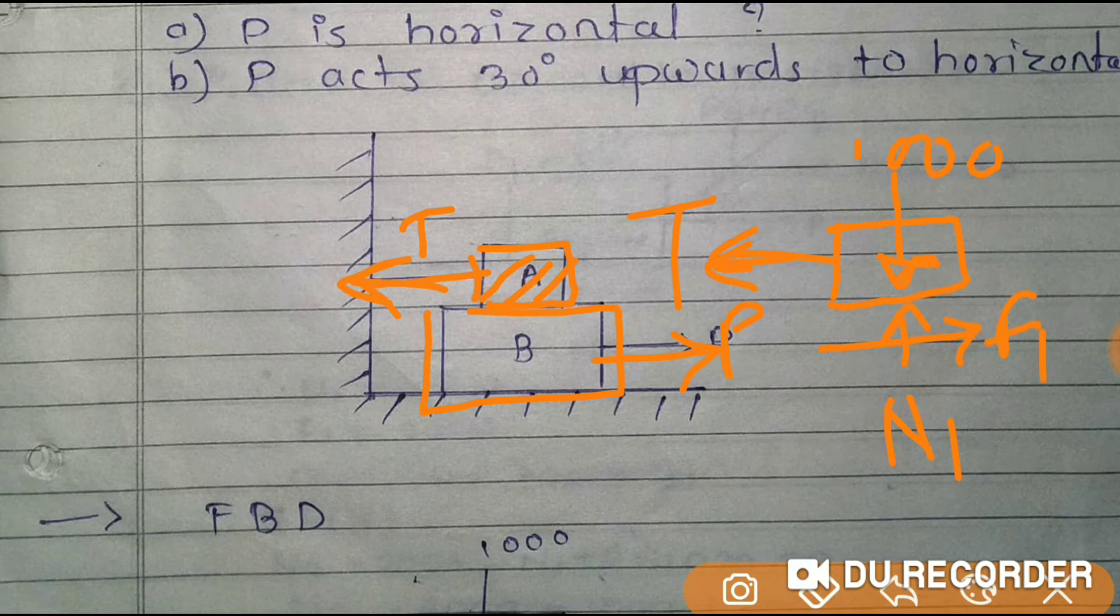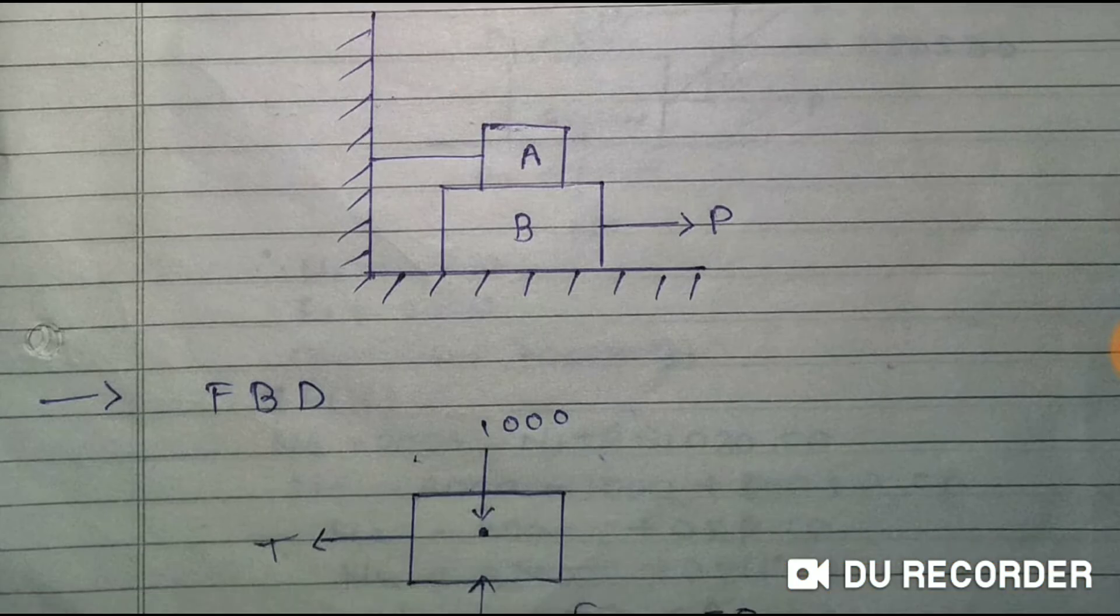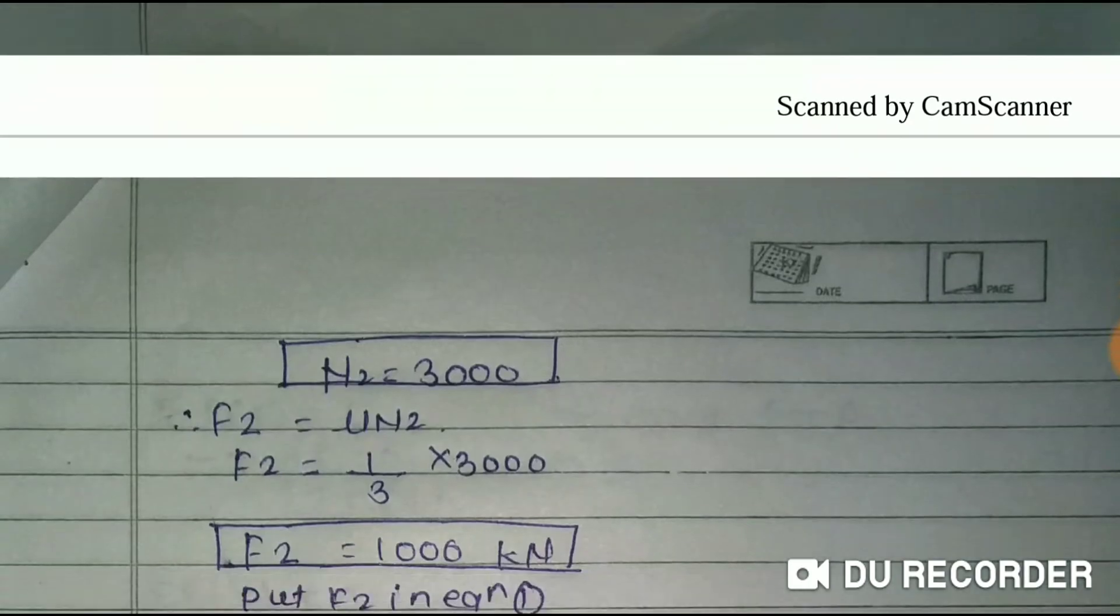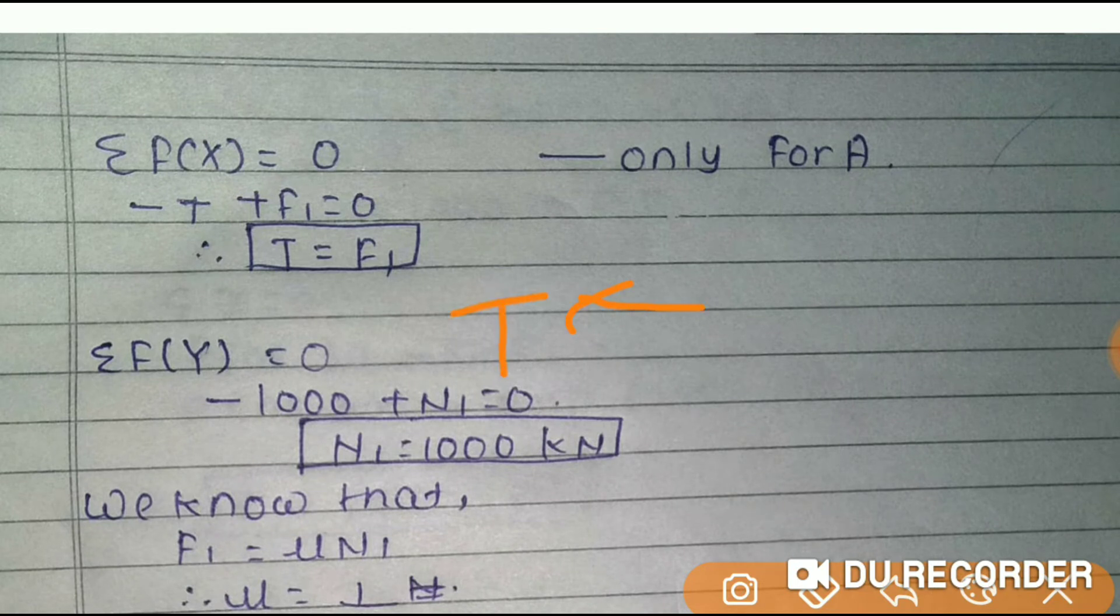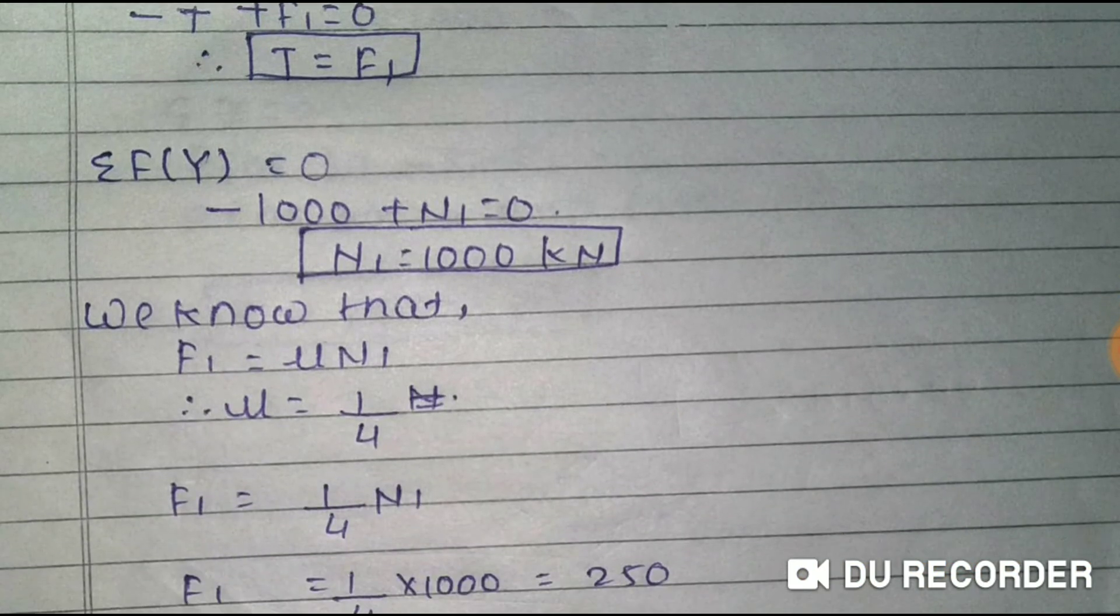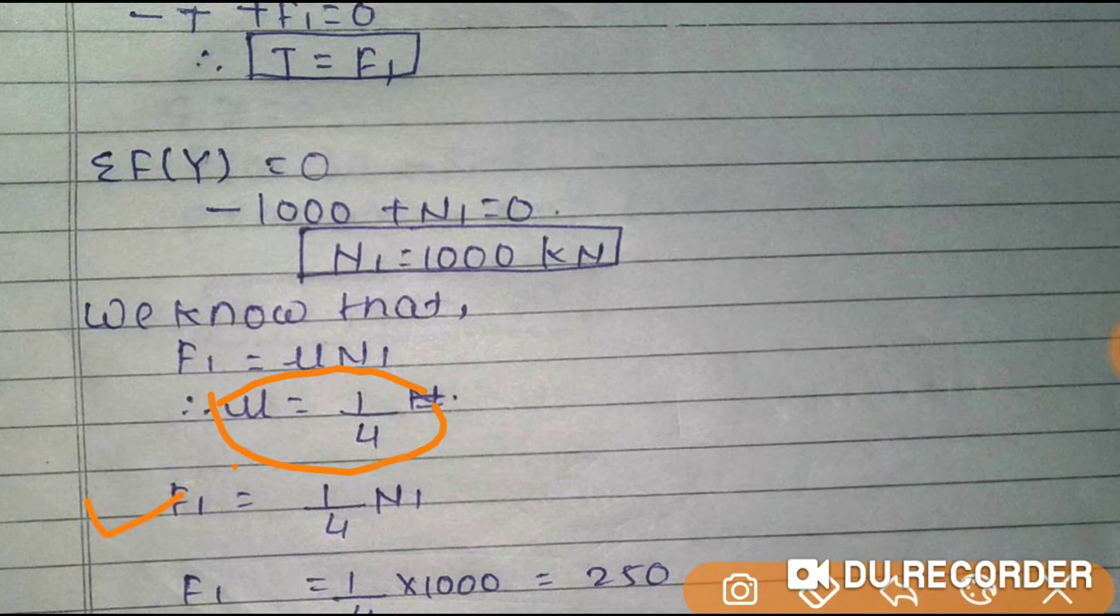When we apply summation of Fx and summation of Fy to the free body diagram, we get T equals F1. Summation Fy gives N1 equals 1000 newton. We know F1 equals mu into N1, so F1 equals one-fourth into 1000, which is 250 newton.